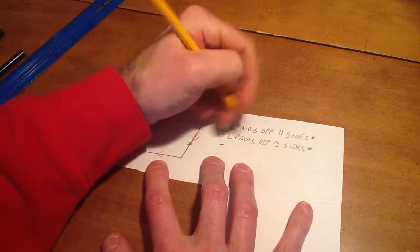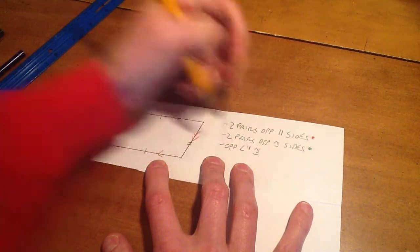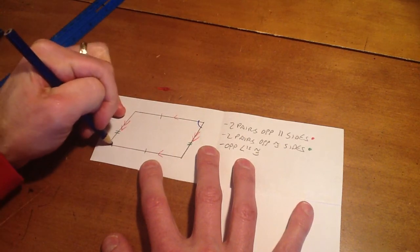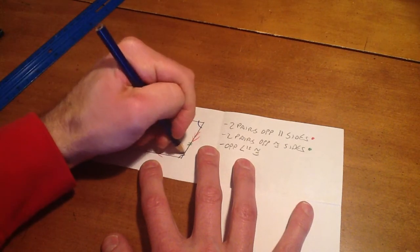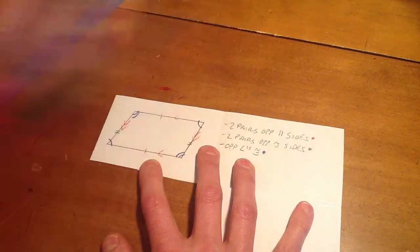Third property. Opposite angles are congruent. So we'll show that by marking these acute angles are congruent, and then the opposite obtuse angles are also congruent, and we color code it again.